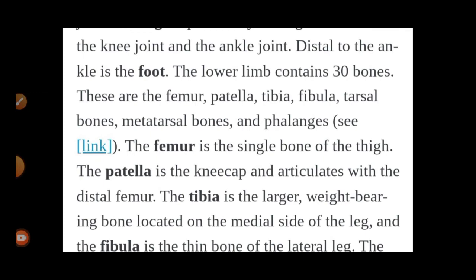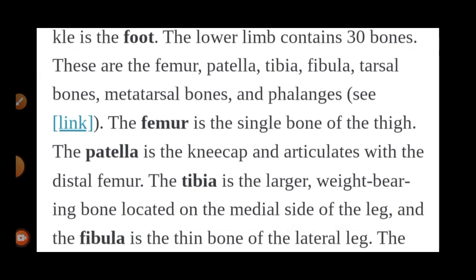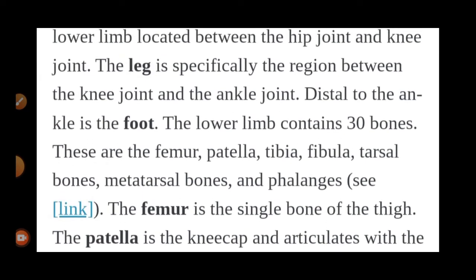The lower limb contains 30 bones. These are: femur, patella, tibia, fibula, tarsal, metatarsal, and the phalanges.